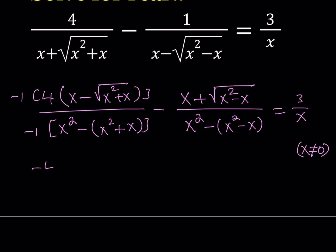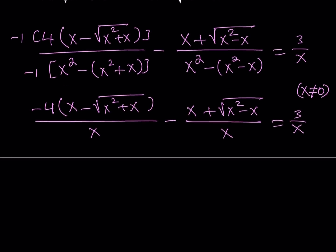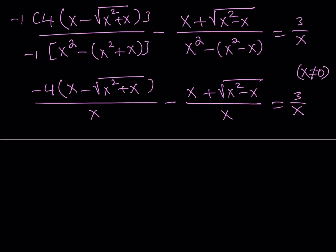So the numerator is going to look like this: negative 4 times the quantity x minus square root of x squared plus x, and this whole thing is going to be divided by x, not negative x, minus here. We don't have to worry about it, because it comes out as x. The numerator is this one, and that's divided by x. Now notice that all the denominators are the same, so we can totally forget about them. In other words, multiply both sides by x, and remember that x does not equal 0.